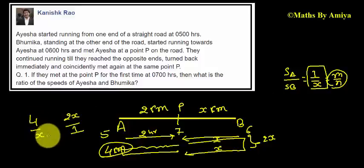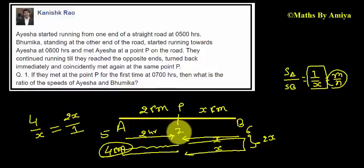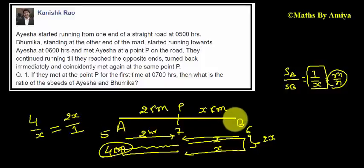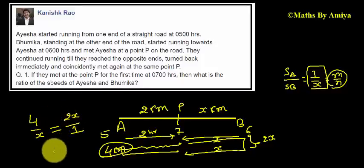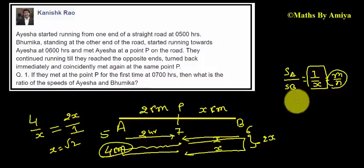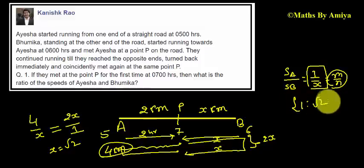Time equals distance upon speed. For the second meeting the time should be the same for both, because they started from point P at the same time — though they had started at different times earlier, from P they start at the same time. Setting the equations equal and solving, X becomes root 2. So our required ratio is 1 is to root 2, or root 2 is to 1. This is our answer.